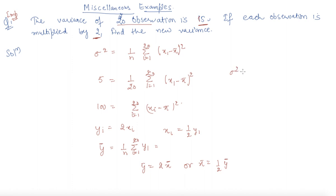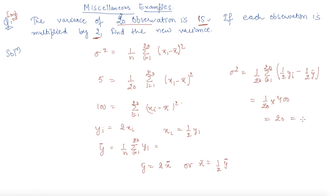The new variance is 1 by 20 summation i equal 1 to 20, in place of Xi I put 1 by 2 Yi minus 1 by 2 Y-bar. This comes out to be 1 by 20 into 400, which equals 20. So the first variance was 5 and the new variance is 2 squared times 5, equal to 20. When each term is multiplied by 2, the new variance is multiplied by its square, which is 2 squared. This is a very important result from the exam point of view.